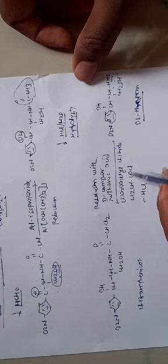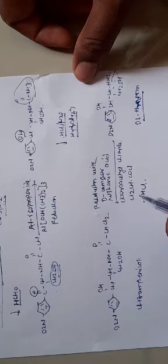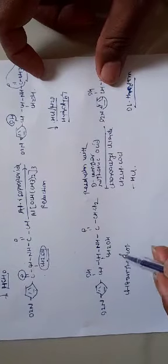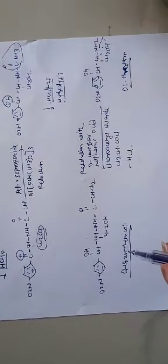This reacts with chloroacetyl chloride, that is Cl2CHCOCl. Reaction with chloroacetyl chloride forms the final chloramphenicol structure.